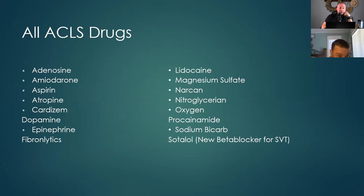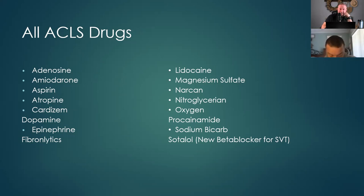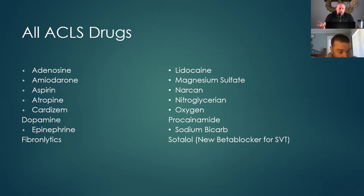Drugs and what they're given for. Adenosine is given for stable atrial rhythm rates that are fast — so our SVTs and sinus tach. We're going to give adenosine. The doses are 6 milligrams, 12 milligrams, and 12 milligrams. Usually if I give my second dose of adenosine and I don't convert them, there's no use going to the third dose because it's not going to work.